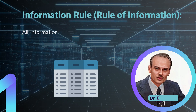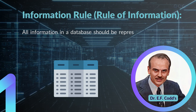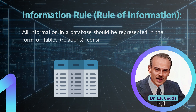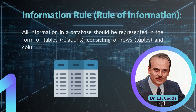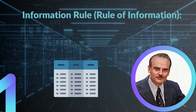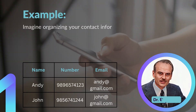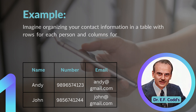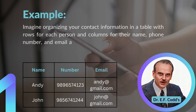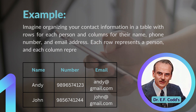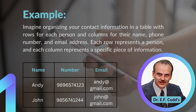Rule number one: the Rule of Information. All information in a database should be represented in the form of tables, or relations, consisting of rows, or tuples, and columns, or attributes. For example, imagine organizing your contact information in a table with rows for each person and columns for their name, phone number, and email address. Each row represents a person, and each column represents a specific piece of information.